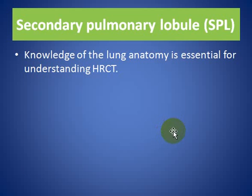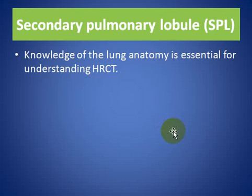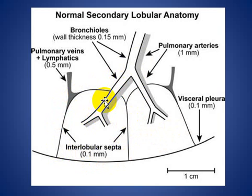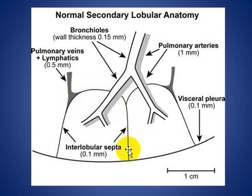In general, we should know the basic anatomy of each secondary pulmonary lobule because it is essential for understanding high-resolution CT scan of the lung. In summary, the secondary pulmonary lobule is supplied by a central pulmonary artery and central terminal bronchiole, contains multiple acini, has lymphatics in the center, and pulmonary veins and lymphatics in the periphery.